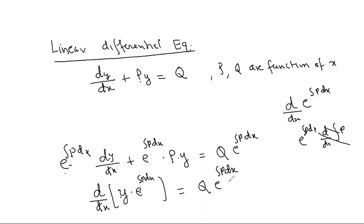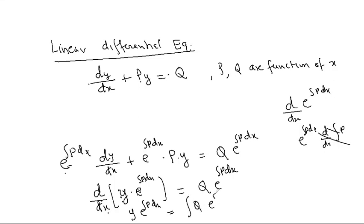Anyone having doubt, please tell me. What did I do first? I multiplied every term with e raised to integral p dx. When I do that, the whole left-hand side became the derivative of y into e raised to integral p dx. Now, to remove the d/dx, I integrate both sides. So the solution is: y·e^(∫p dx) = ∫q·e^(∫p dx) dx + c. This is the solution of a linear differential equation.